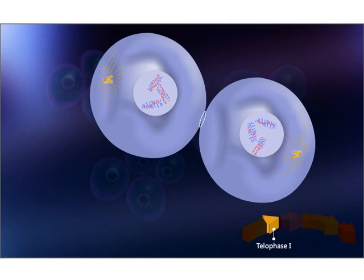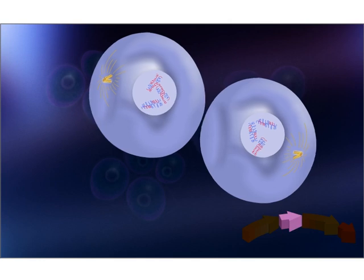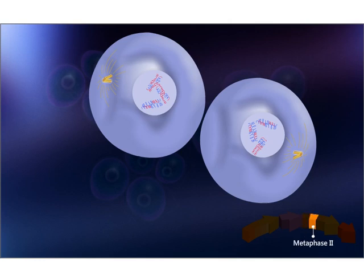With the first nuclear division, the cytoplasm may or may not divide. Telophase one is succeeded by meiosis two, which begins without further replication of DNA in the chromosomes. Meiosis two is further divided into prophase two, metaphase two, anaphase two, and telophase two.